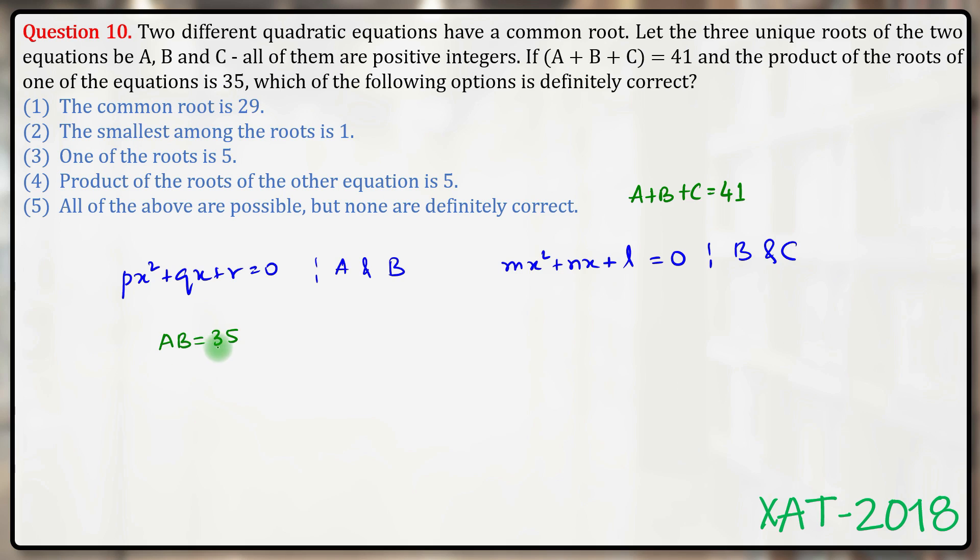So in how many ways can I write 35 as a product of two positive integers? Because we know that a, b, and c all are positive integers. So 1 times 35, 5 times 7, and that's about it.